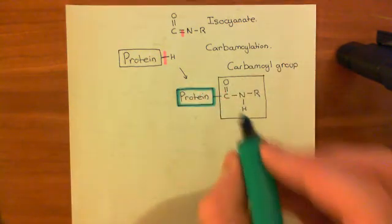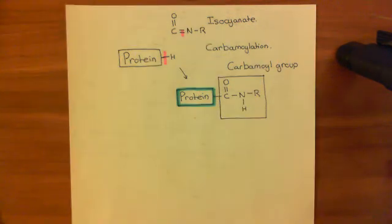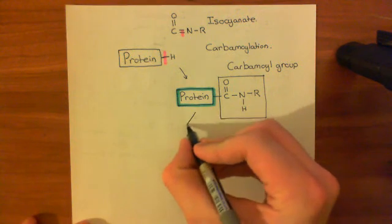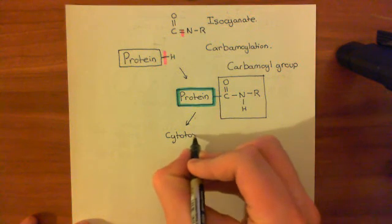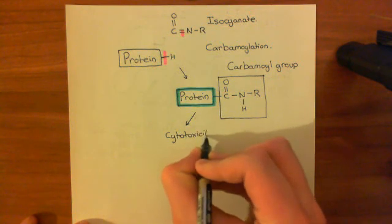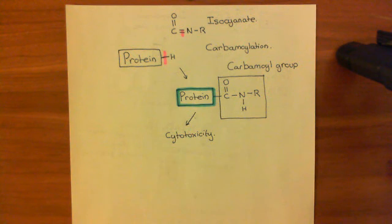Now, this is probably one of the actually main ways that nitrosoureas are cytotoxic. They're going to cover your proteins in carbamoyl groups, causing dysfunction. And this is basically just horrible for the cell. It's going to cause cell death, cytotoxicity. So this is probably a very important mechanism by which nitrosoureas actually kill cells. Now, you can see that this isn't specific to cancer cells whatsoever, really. This is just going to kill any old cell it comes across.